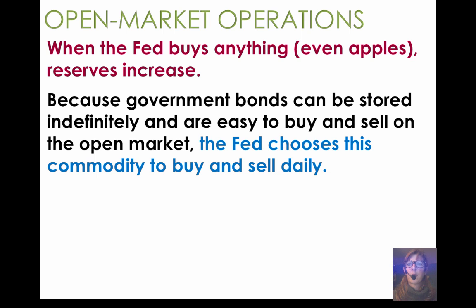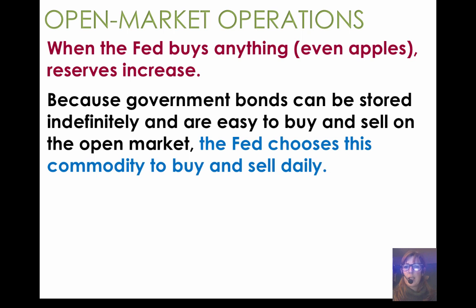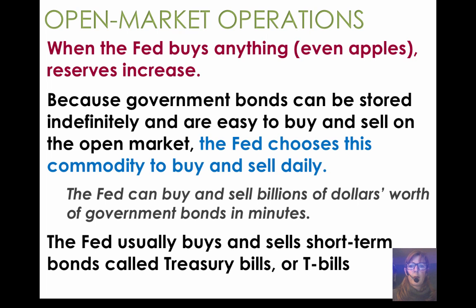Probably there's not a single store that can supply enough apples that the Federal Reserve needs on a daily basis to increase or decrease the money supply — so they buy something that doesn't rot, something with storage ability. What the Federal Reserve actually buys and sells is not apples but federal government bonds. It's a convenient thing to purchase for the Fed and money gets from the Fed into the economy.